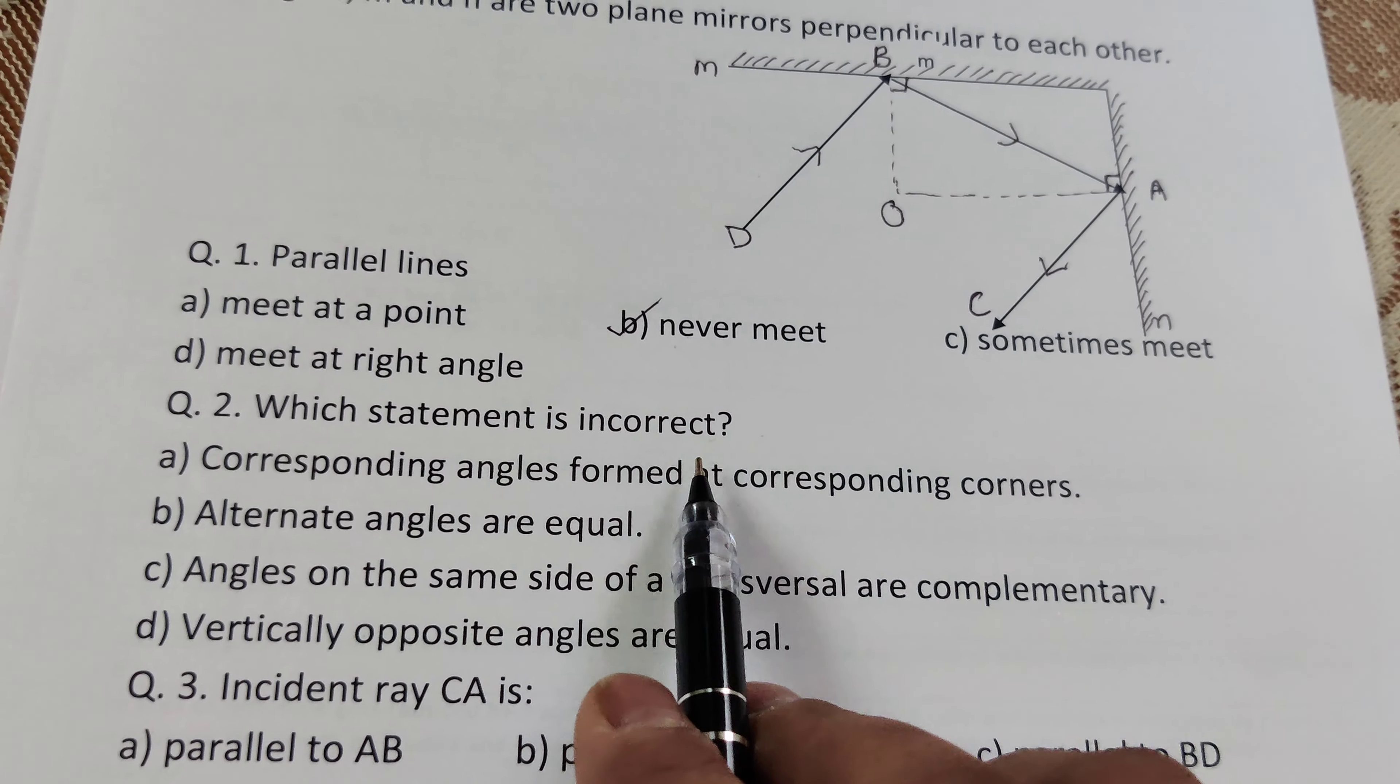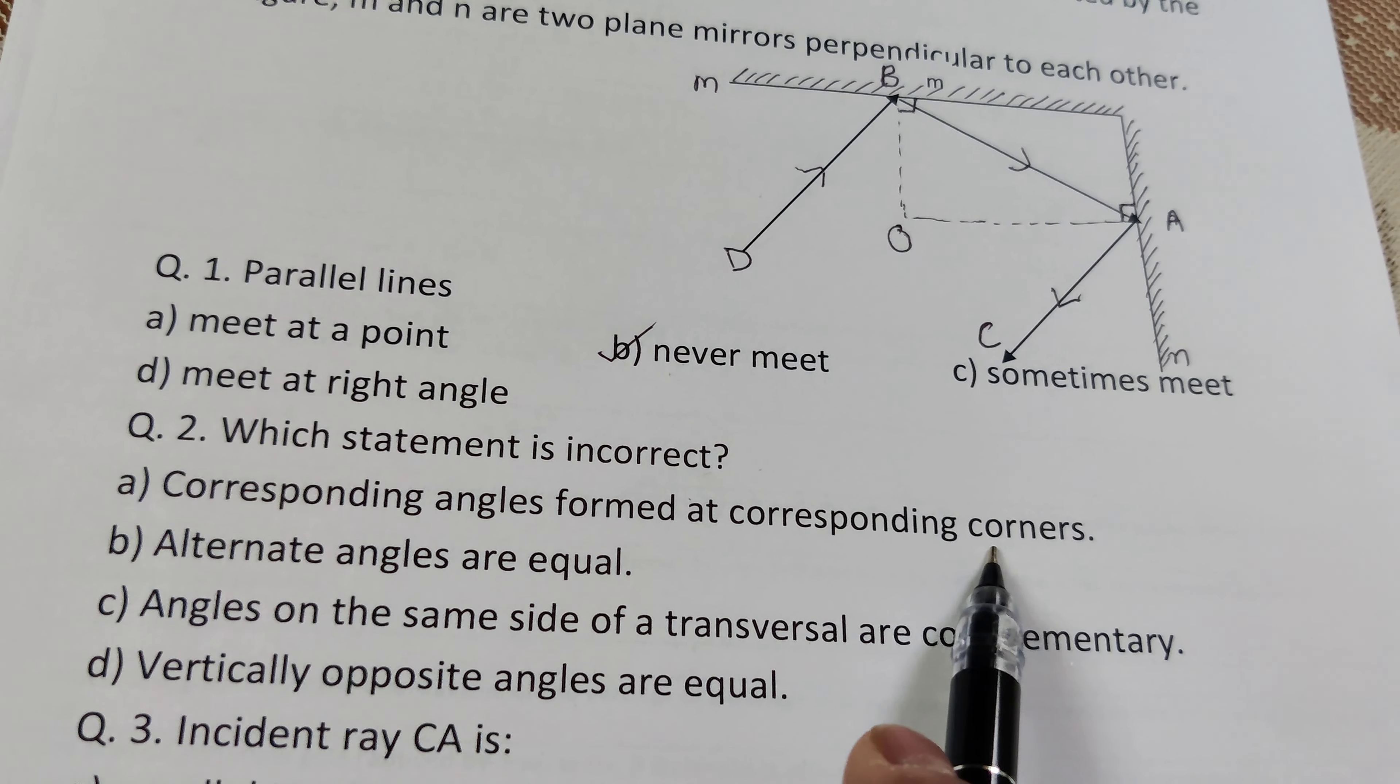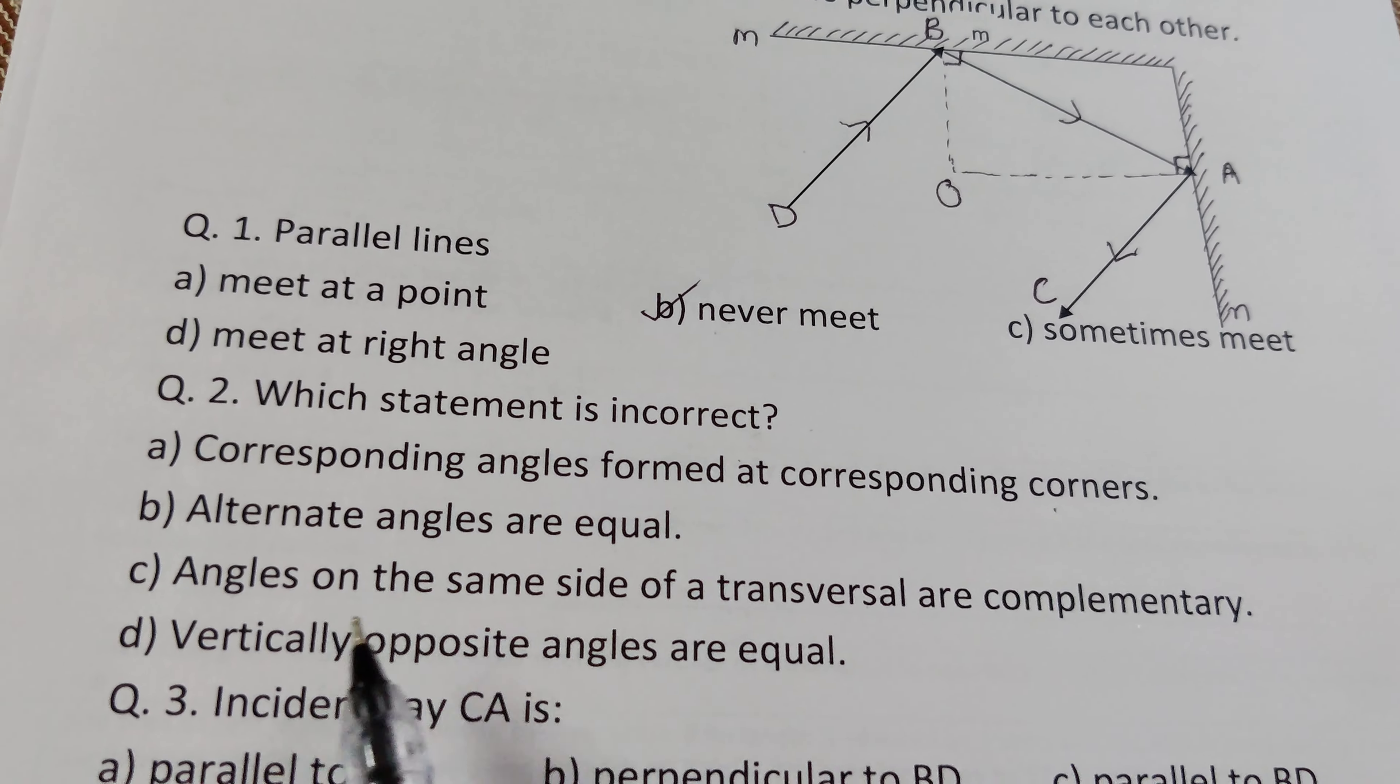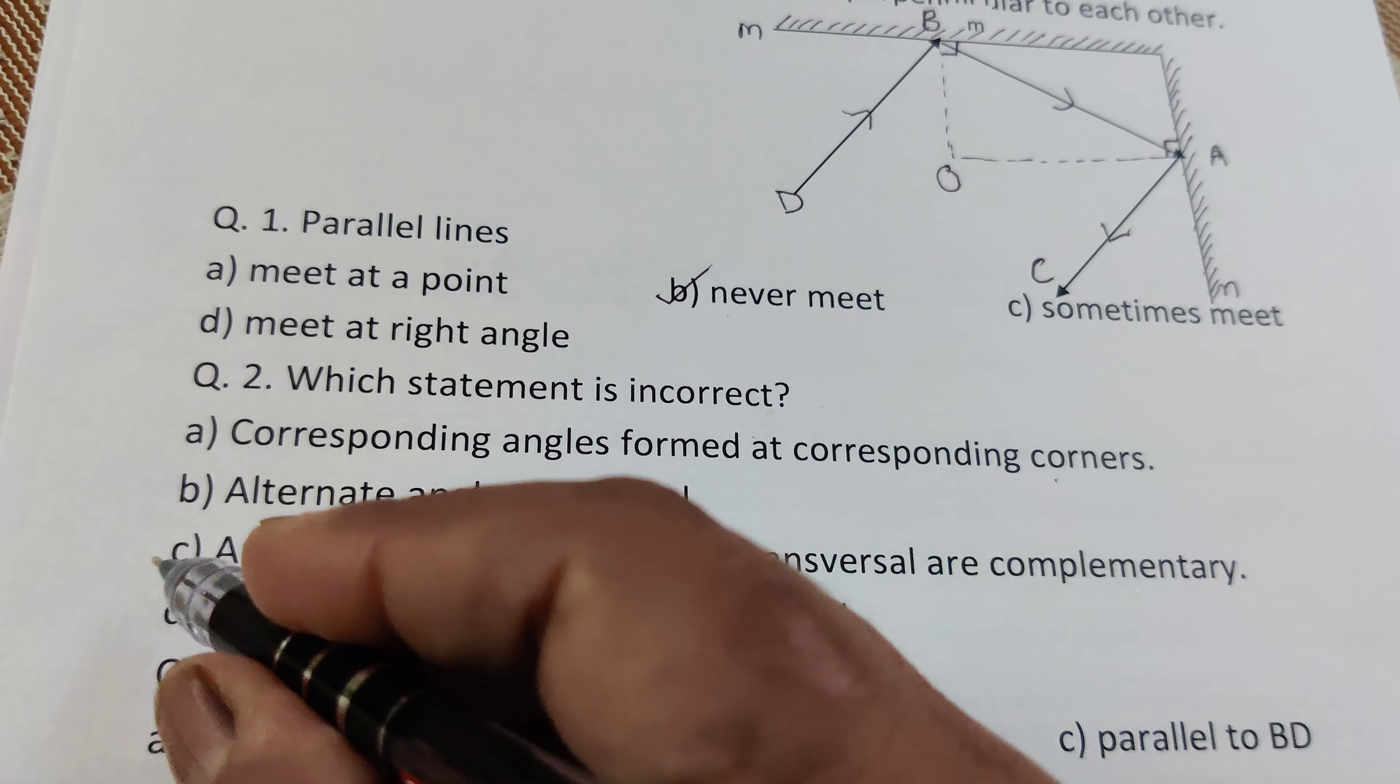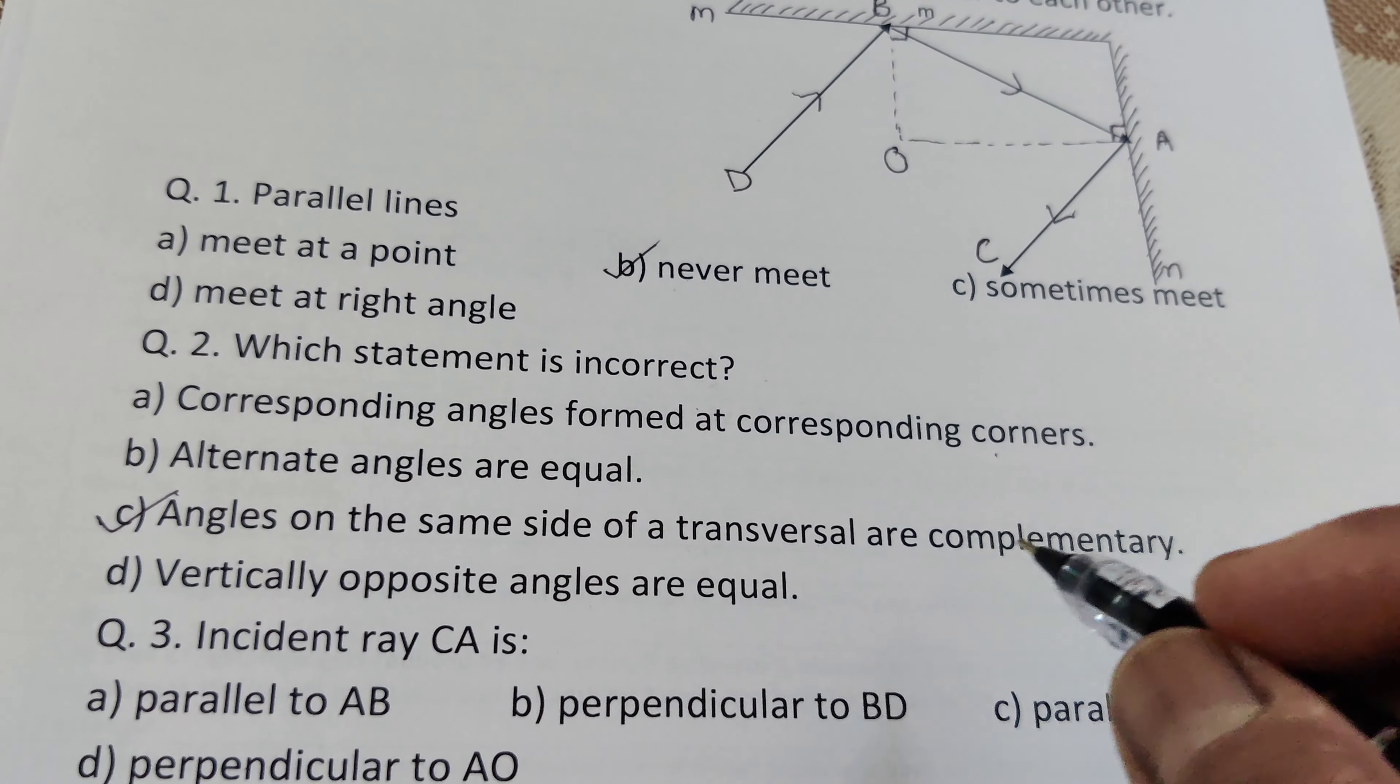Which statement is incorrect? Corresponding angles formed at corresponding corners - true. Alternate angles are equal - yes, true. Angles on the same side of transversal are complementary - no, this is incorrect. The angles on the same side of a transversal are supplementary.